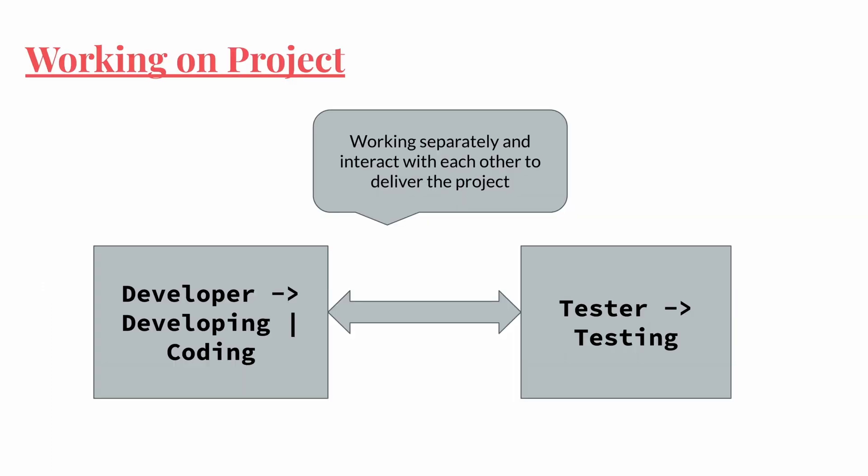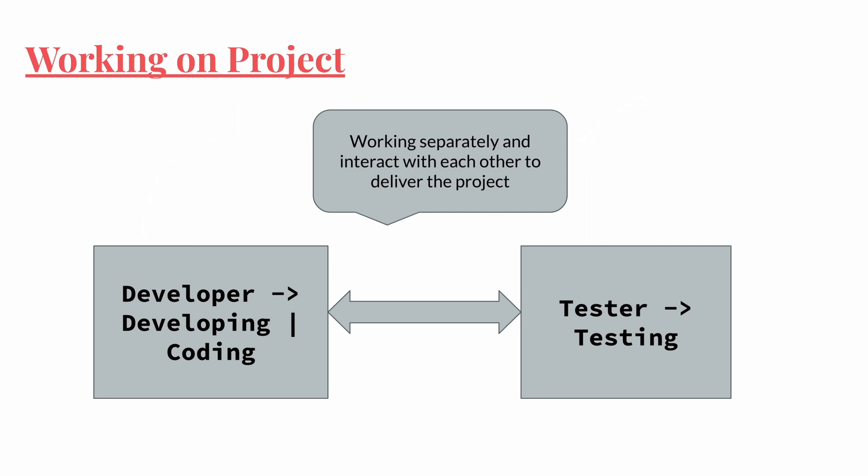To understand more about AppDelegate, consider this example: you and your friends are working on a project — some of you are working on the coding part and some on the testing part. You are both working separately, but you have to communicate with each other to deliver the task to the end user smoothly.